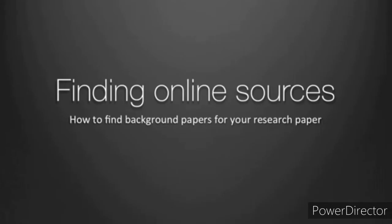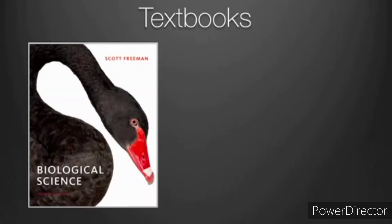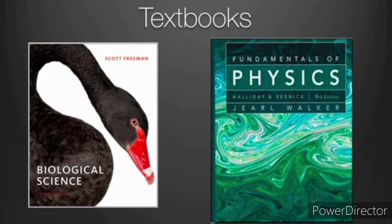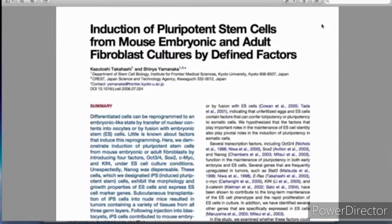In this video, I'm going to show you how to find background information for your research paper. Mostly we'll be talking about online resources, but you can also use textbooks. Textbooks are not original research papers. When you write a research paper, you need to make sure that your idea is new, and you need to connect it to other research in the field. So you need to read previous research before you do your own experiment. Reading other research papers will also help you learn the vocabulary and style of scientific writing. These days, it's pretty easy to find lots of previous research on the internet.